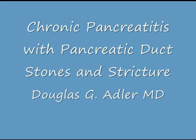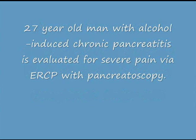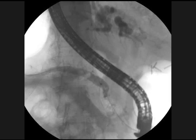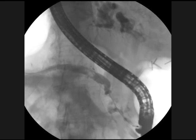Chronic pancreatitis with pancreatic duct stones and stricture. A twenty-seven-year-old man with alcohol-induced chronic pancreatitis is evaluated for severe pain by ERCP with pancreatoscopy. The initial pancreatogram shows a grossly dilated pancreatic duct, multiple filling defects, and a stricture approximately one to two centimeters long at the level of the pancreatic genu.